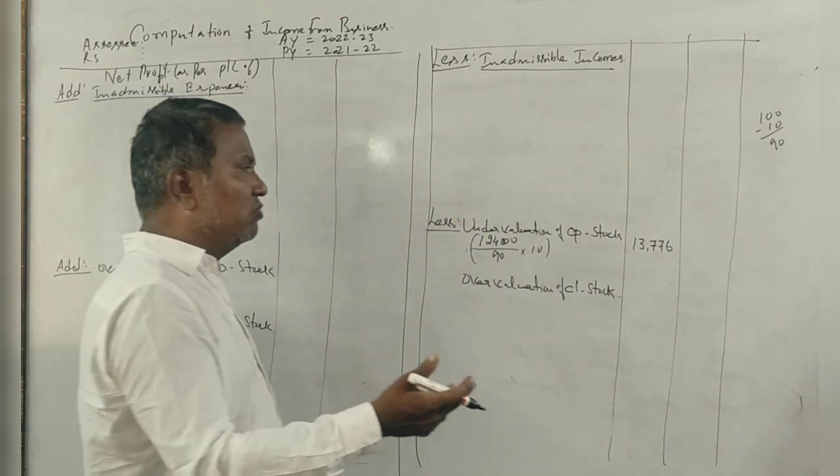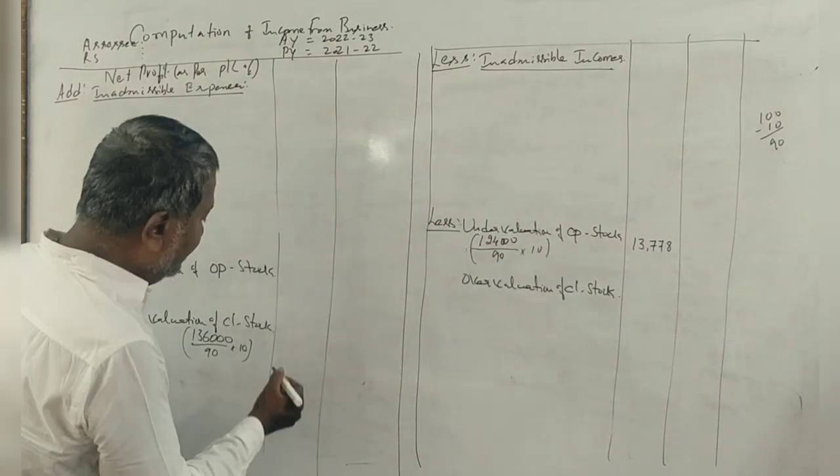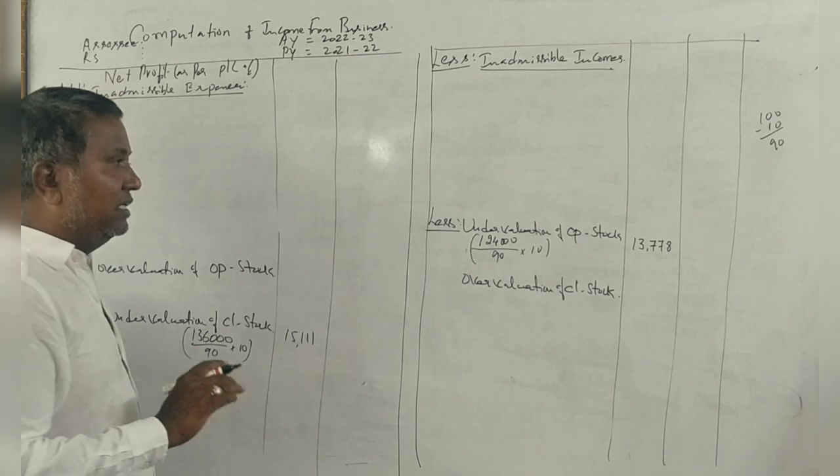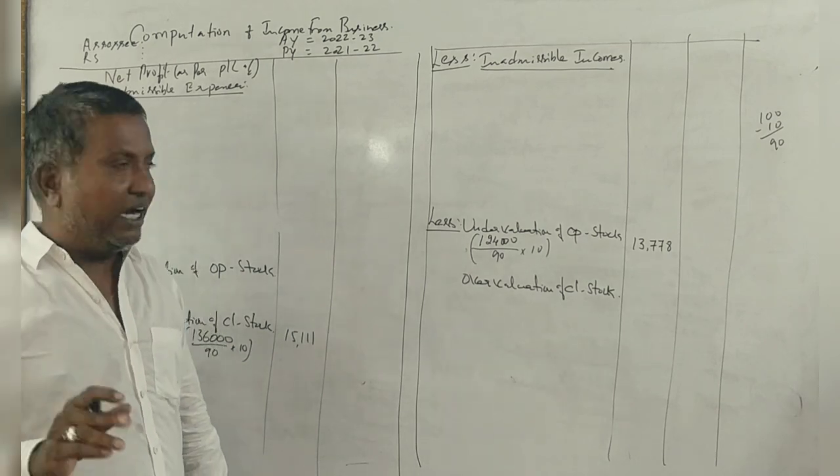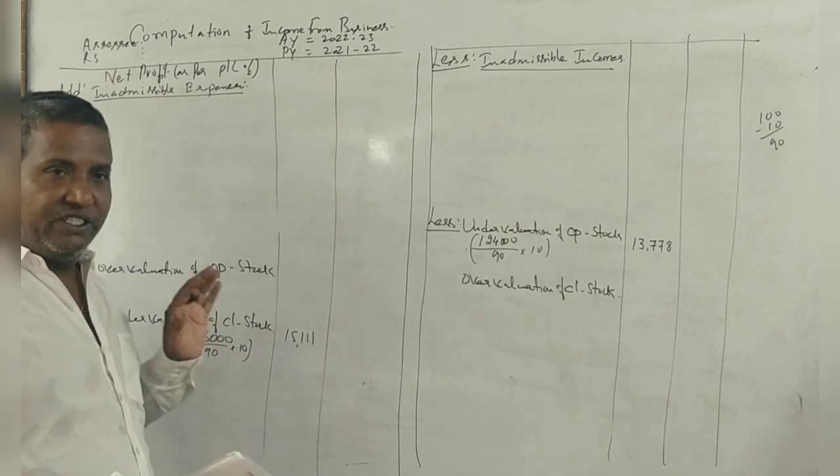13,770, 7,770, 6,000. How much? 15,111. Clear? Here are the figures: undervaluation of opening stock, undervaluation of closing stock.